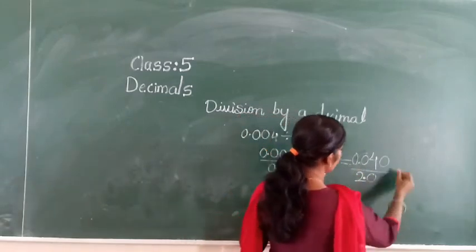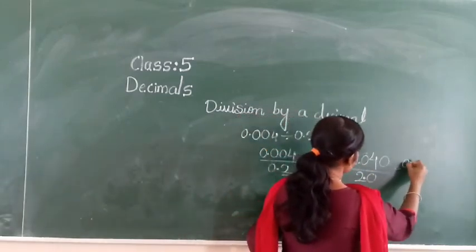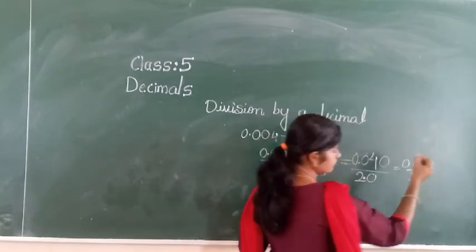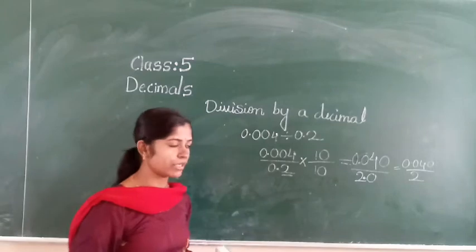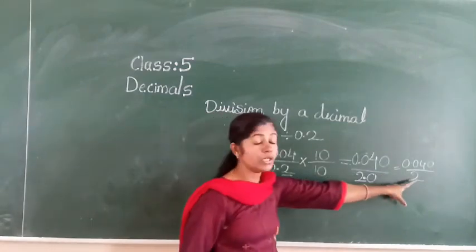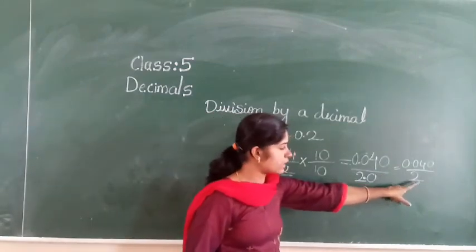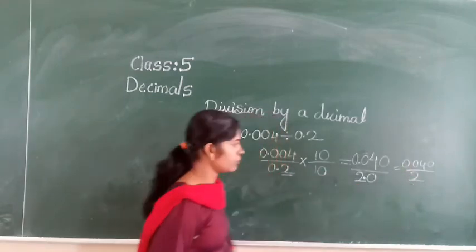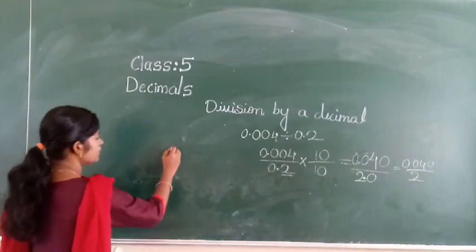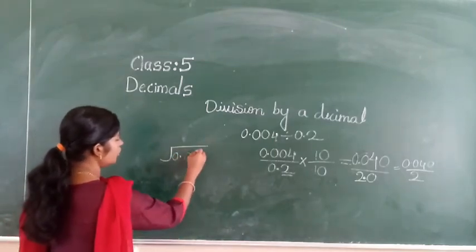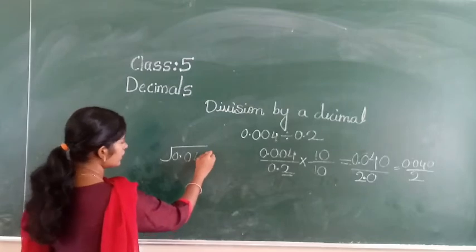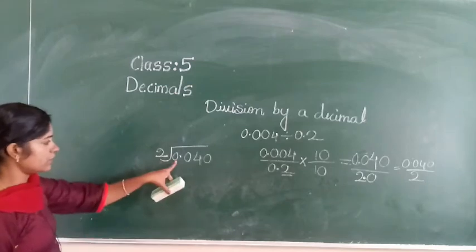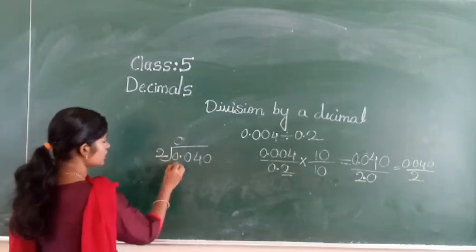So 0.040 divided by 2. We write it as 0.04 divided by 2. This is now a decimal number divided by a whole number. Now you divide: take 1 digit — 2 zeros are 0, 0 minus 0 is 0. So next you must give the point here in the quotient. Next you take this 0 down. 2 zeros are 0, 0 minus 0 is 0. Next you take this 4 down.